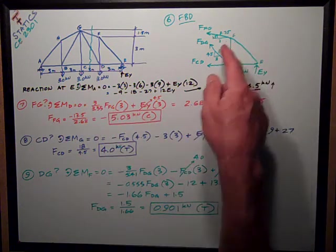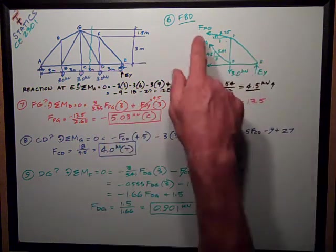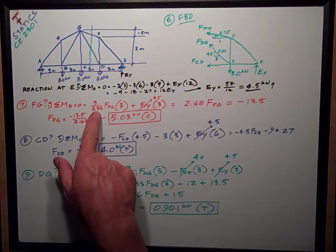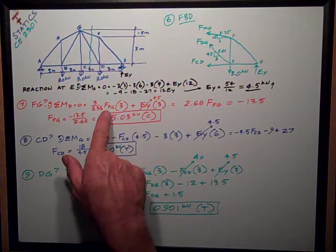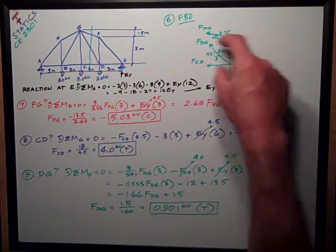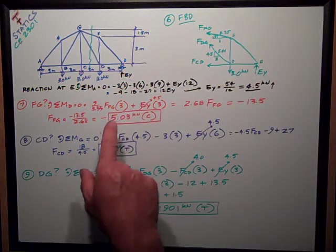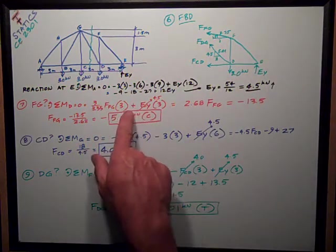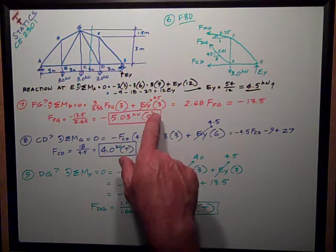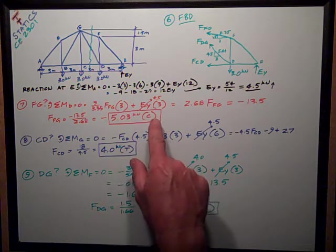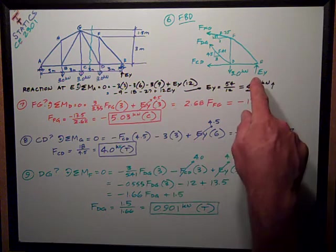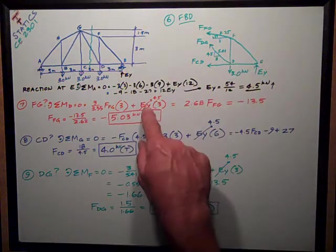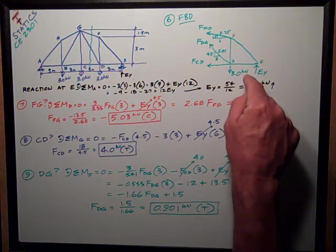The only thing I have creating moment about it are the horizontal component of FFG, which is 3 over 3.35 FFG, times its moment arm, which is 3 meters. It is trying to rotate counterclockwise, so it's positive, plus the reaction at EY, which is 4.5, also trying to rotate counterclockwise about point D, so it's positive, times its 3 meter moment arm.